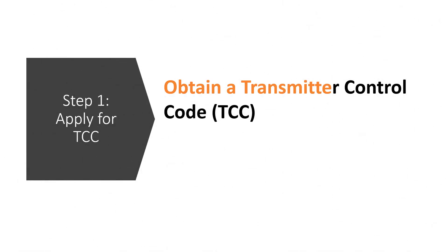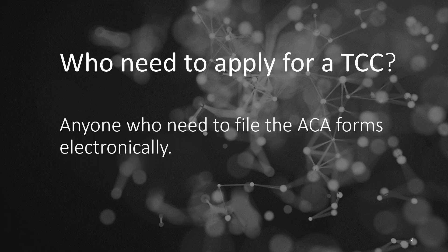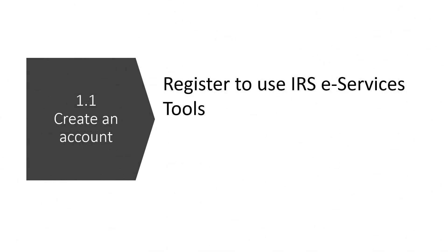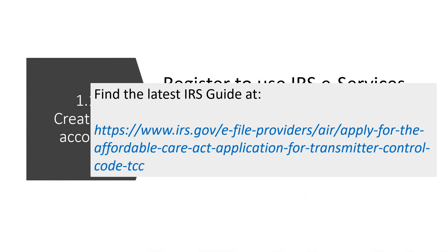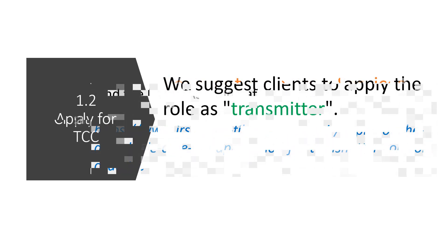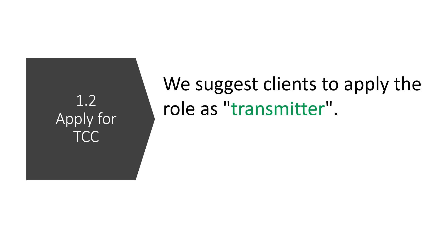Step 1: Obtain a TCC, Transmitter Control Code. For those new to ACA e-filing, securing a TCC for the AIR system is essential. Begin by establishing an ID.me account, which grants you access to e-services and a suite of other online resources. With your e-services account active, proceed to submit an ACA application for TCC.